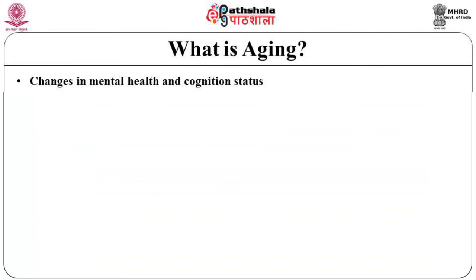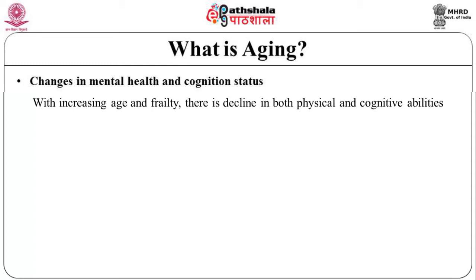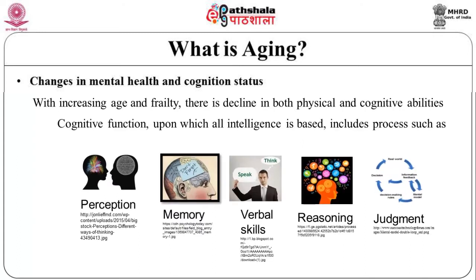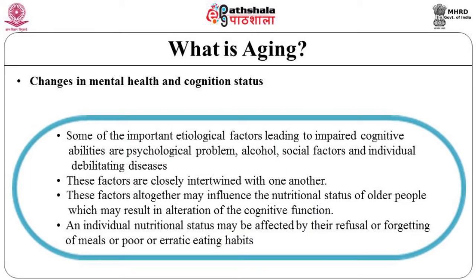There are changes in mental health and cognitive status which also influence diet among the elderly. With increasing age and frailty, there is a decline in both physical and cognitive abilities. Cognitive functions include perception, memory, verbal skills, reasoning, and judgment. Important etiological factors leading to impaired cognition include psychological problems, alcohol use, social factors, debilitating diseases, and these factors are closely intertwined with one another. These factors may together influence the nutritional status of older people, potentially resulting in alteration of cognitive function, due to refusal or forgetting of meals, or poor and erratic eating habits.